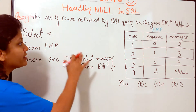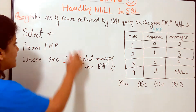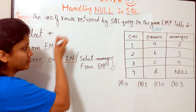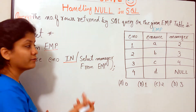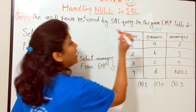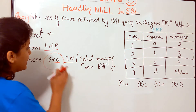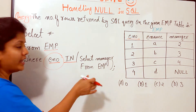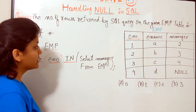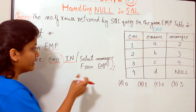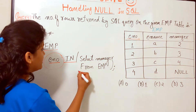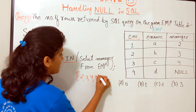We have the employee table with four rows. The query is: SELECT * FROM employee WHERE employee_number IN (SELECT manager FROM employee). The subquery is independent — it selects the manager column from employee, which gives us the values 2, 3, 4, and NULL. So the set we are checking membership against is {2, 3, 4, NULL}.